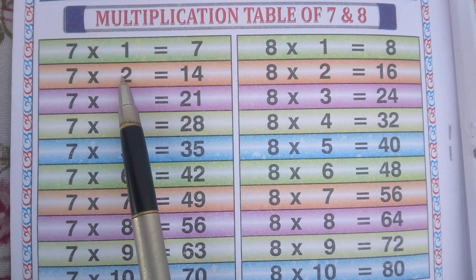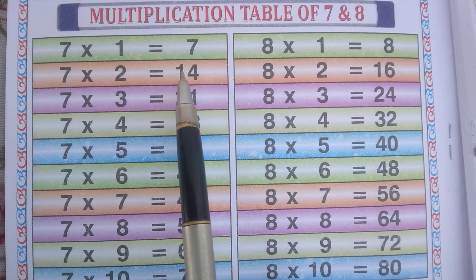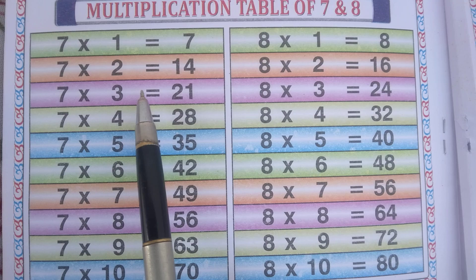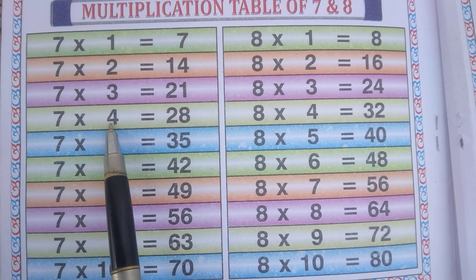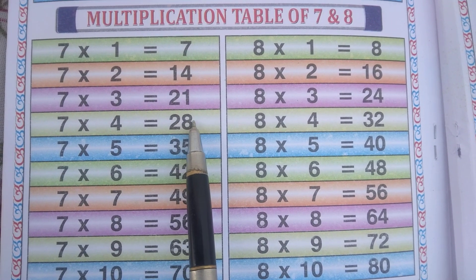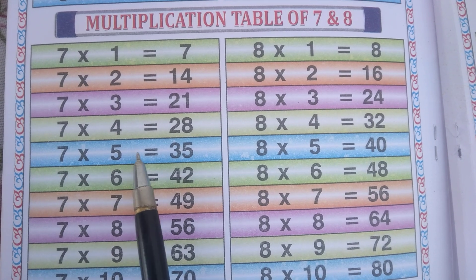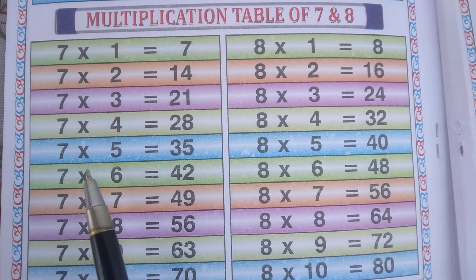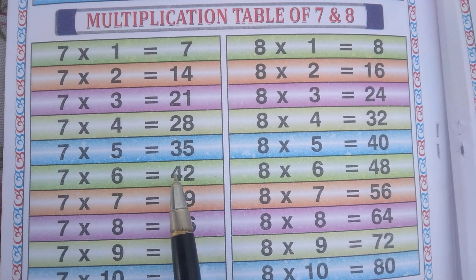7 2s are 14, 7 3s are 21, 7 4s are 28, 7 5s are 35, 7 6s are 42,